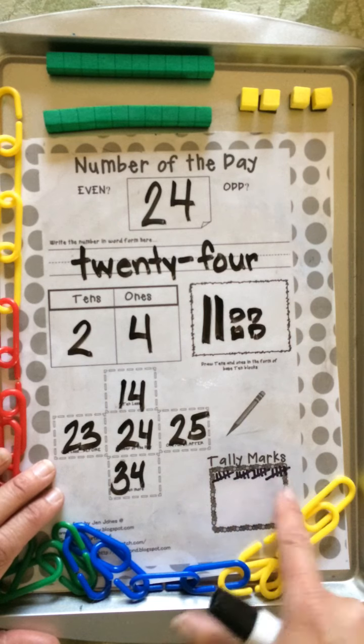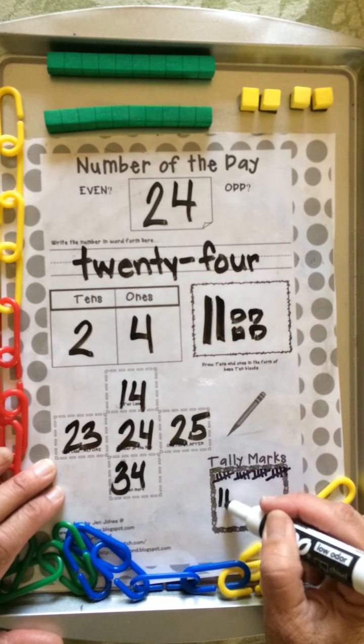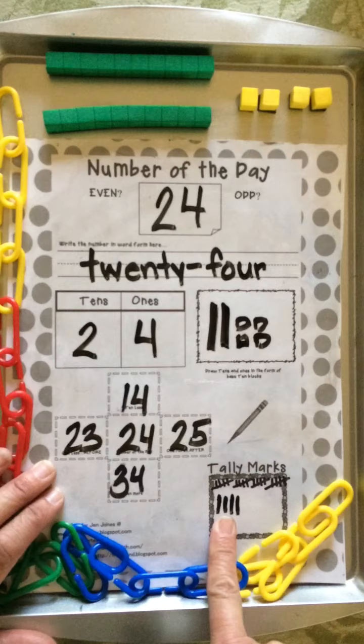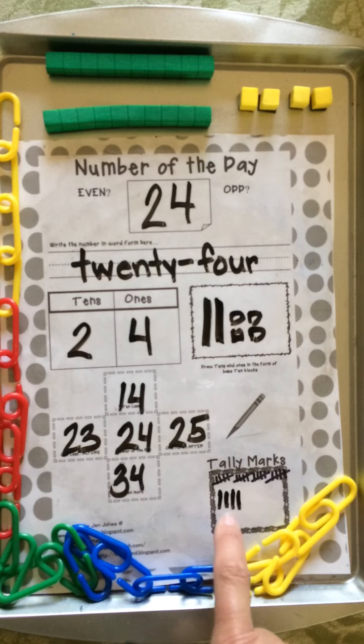5, 10, 15, 20, 21, 22, 23, 24. What's going to happen on Monday with our tally marks?